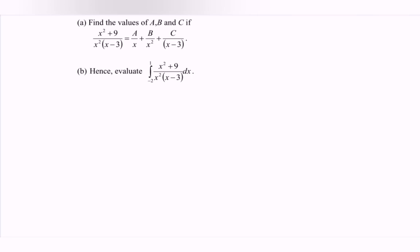Find the value of a, b, c if the situation given is as follows. For the numerator we have x squared plus root of 9. For the denominator, we have x squared multiplied with x minus 3. If we expand, for the denominator we will have x cubed. So this is considered as a proper fraction.